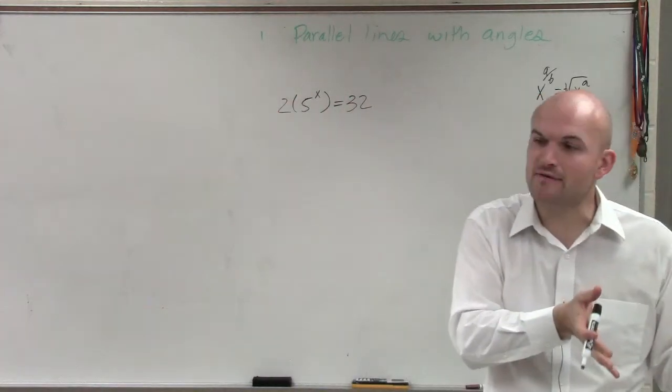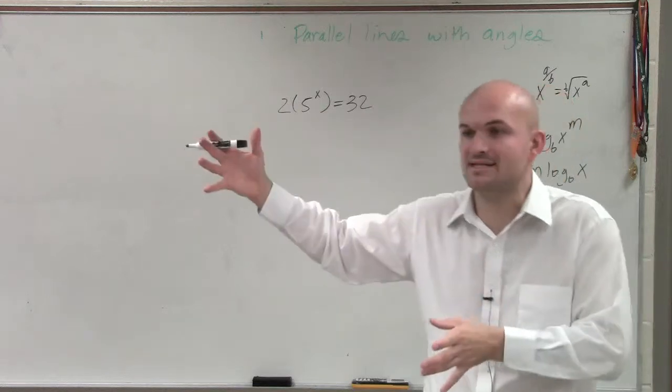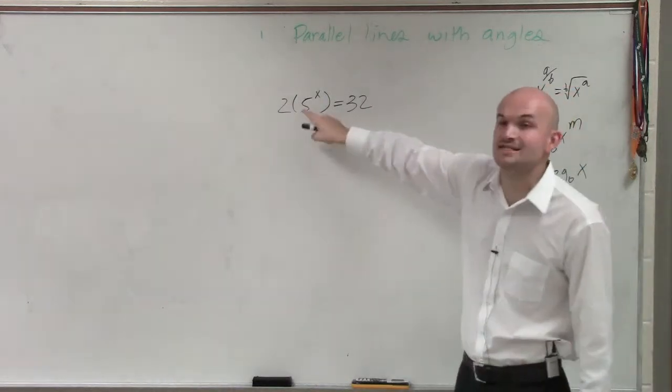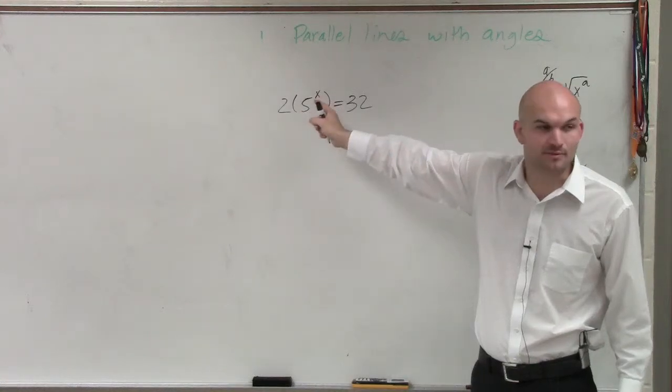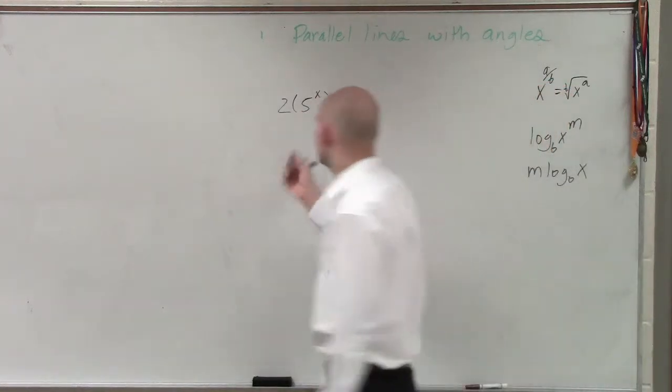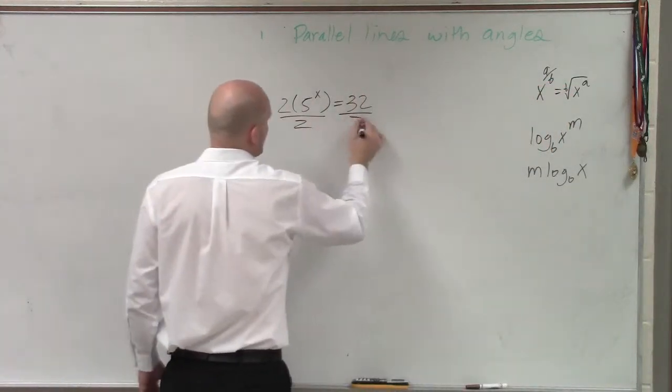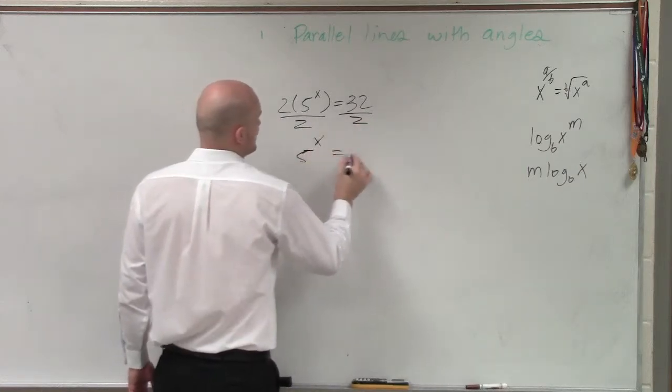when we have a base and its exponent equal to a base and the exponent, we first need to isolate the power, the base and exponent. So the first thing I'll do is divide by 2. So I have 5 to the x equals 16.